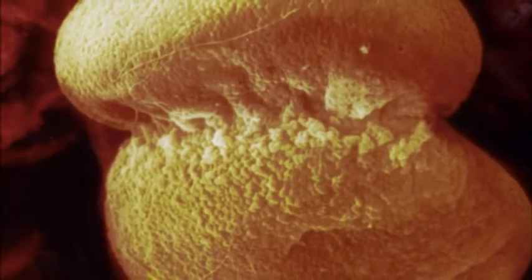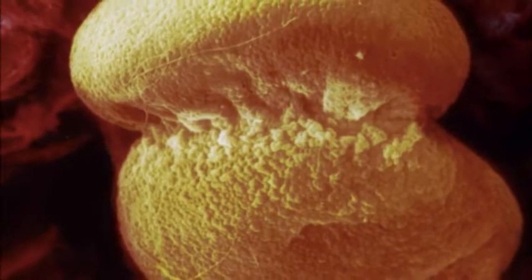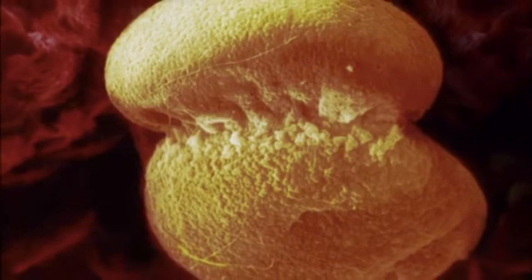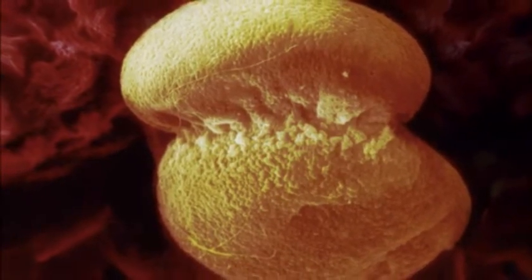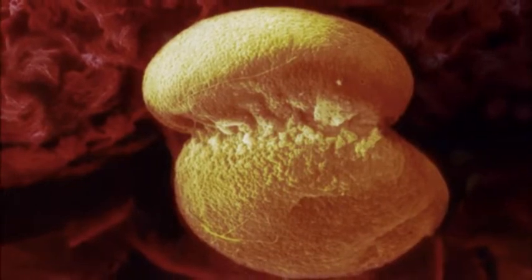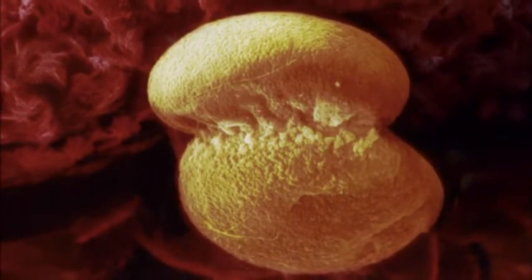One milestone event takes place just two weeks after conception, when the blastocyst is about the size of a poppy seed. This is the moment when the cells start to organize themselves into an embryo. The process is called gastrulation.